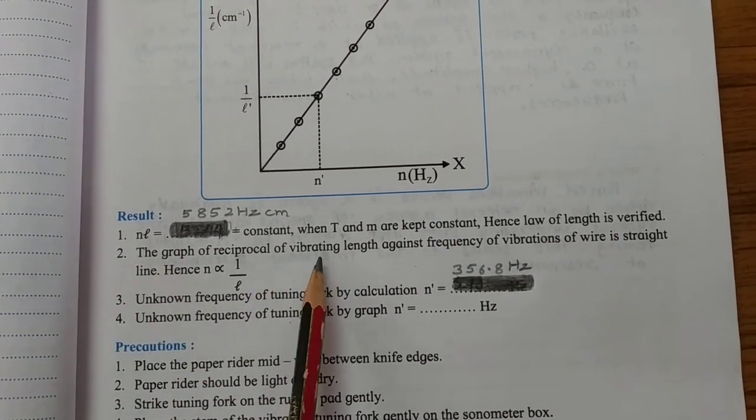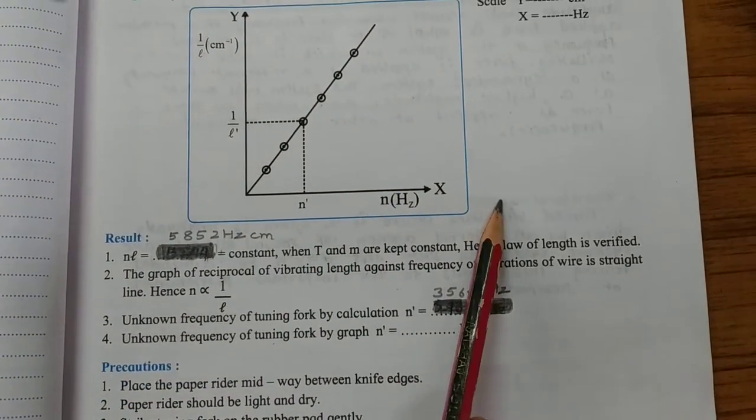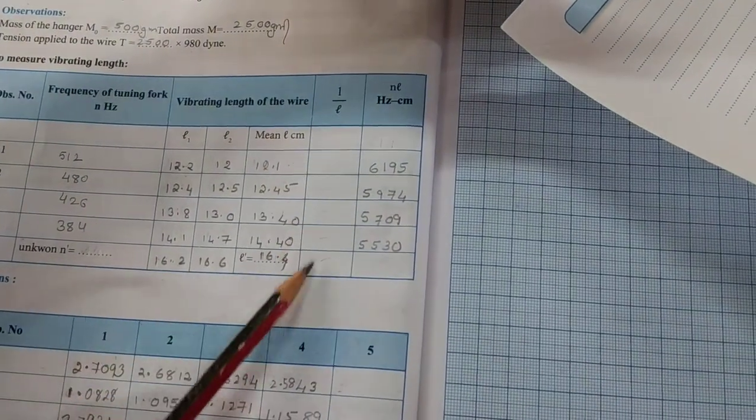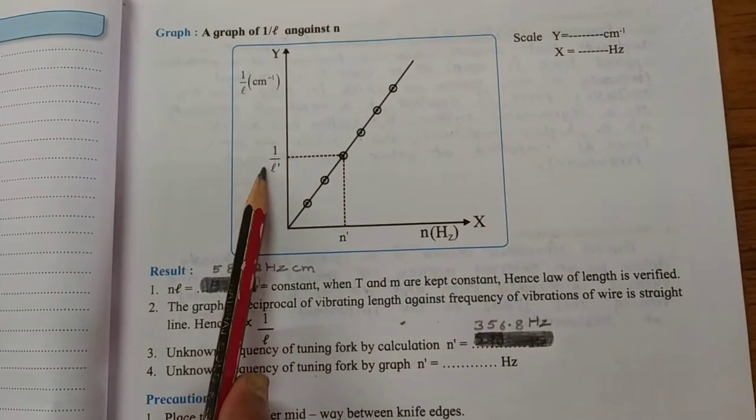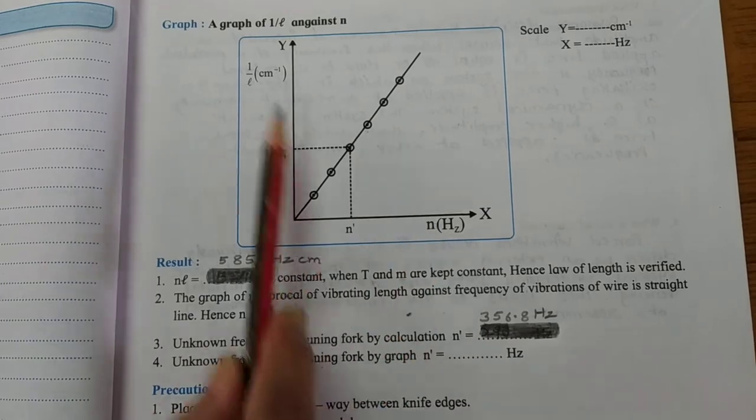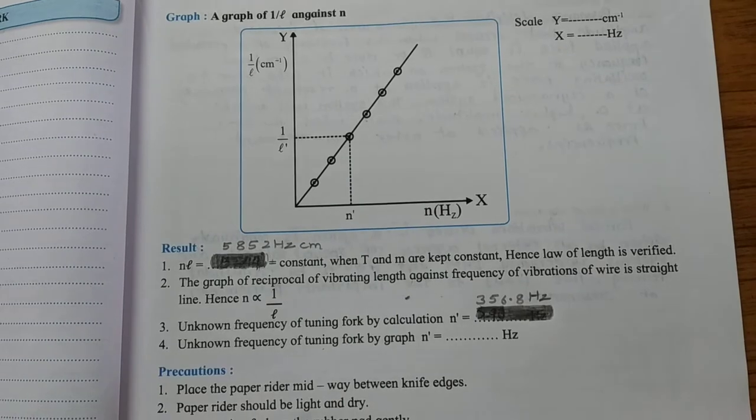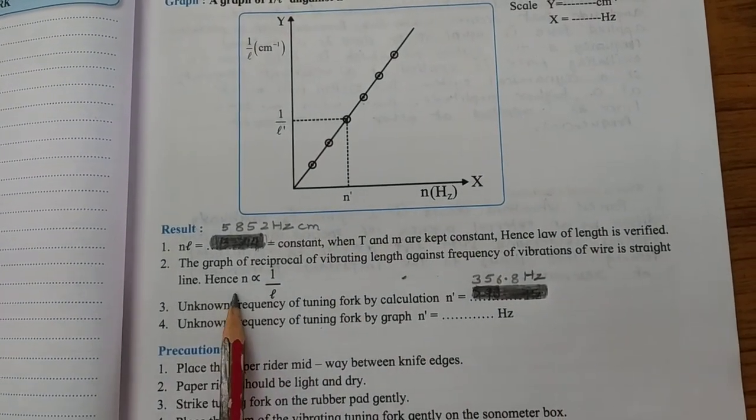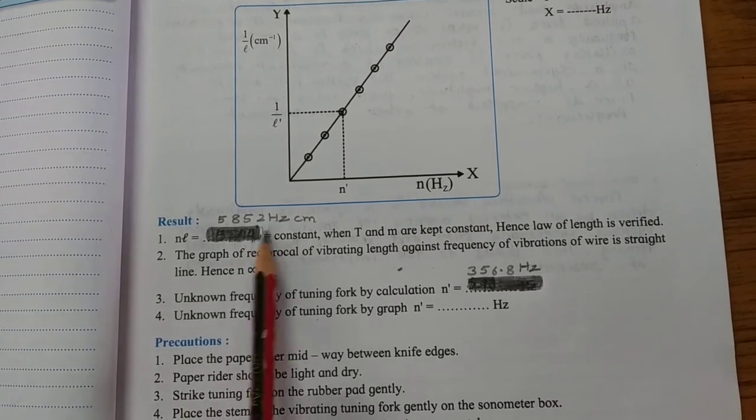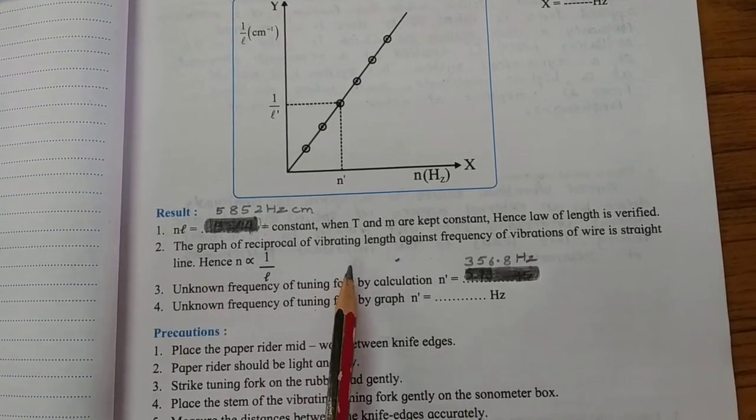The graph of reciprocal of vibrating length against frequency of vibration of wire, if we plot it, for that we need 1 by l. A work for assignment for you is to find 1 by l and plot a graph of 1 by l versus the frequency. If you plot a graph like this, you get a straight line graph. Therefore, since the graph is a straight line, n is inversely proportional to l. This is by calculation and this is by graph that we prove that nl is constant.